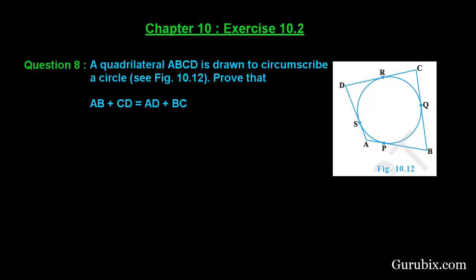Welcome friends, let us solve question number 8 of exercise 10.2 of chapter 10. The question says a quadrilateral ABCD is drawn to circumscribe a circle as shown in figure 10.12.